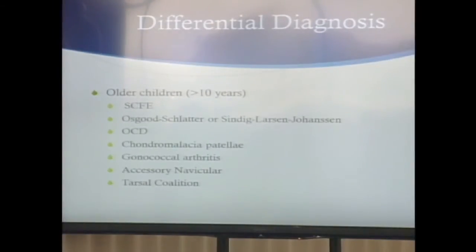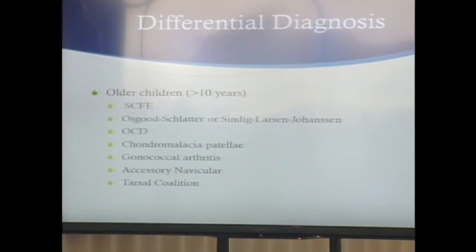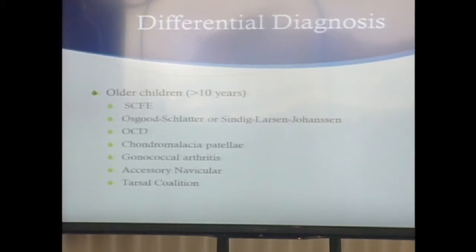Older children have some of the same things, but we expand it further to include SCFE — slipped capital femoral epiphysis. Older children tend to get overuse knee problems: Osgood-Schlatter's and Sinding-Larsen-Johansson. OCD shows up again, as well as patellofemoral pain. And you have to consider that older children may be sexually active, so don't forget gonococcal arthritis, as well as foot conditions such as tarsal coalition.